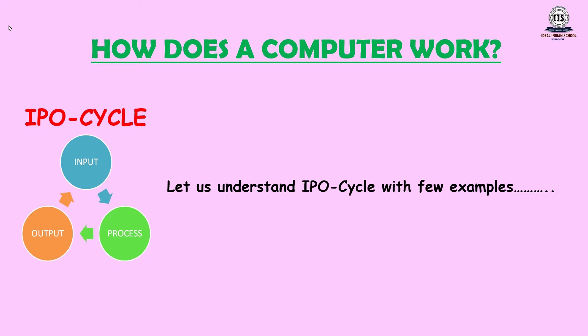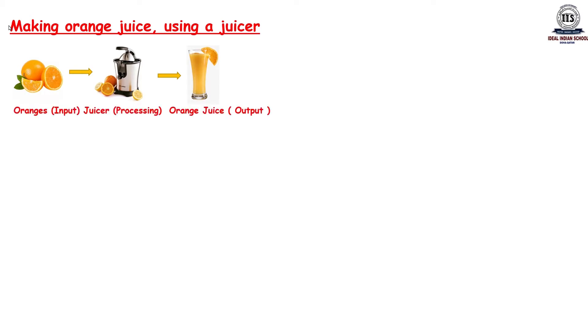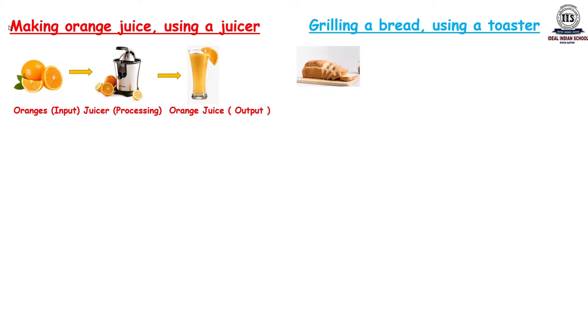Let us understand the IPO cycle with a few examples. Making orange juice using a juicer — you need oranges, then a juicer, and then you get fresh orange juice. So here: oranges are the input, the juicer is the processing, and orange juice is the output.